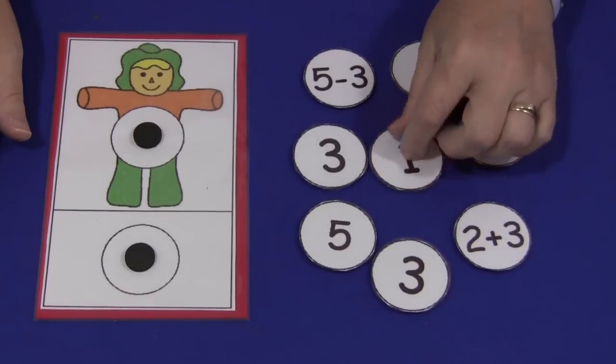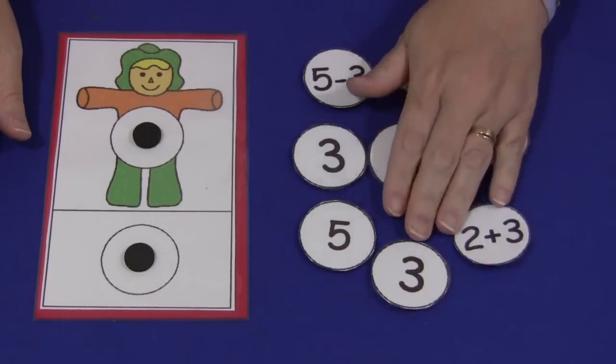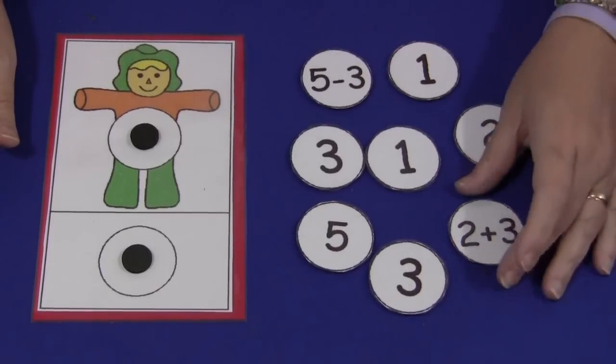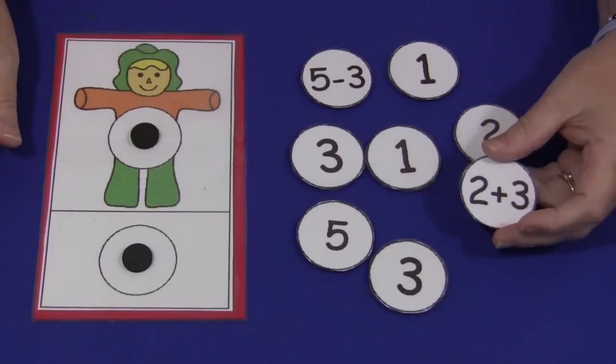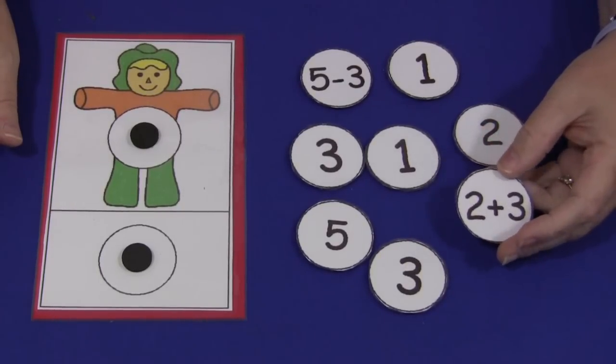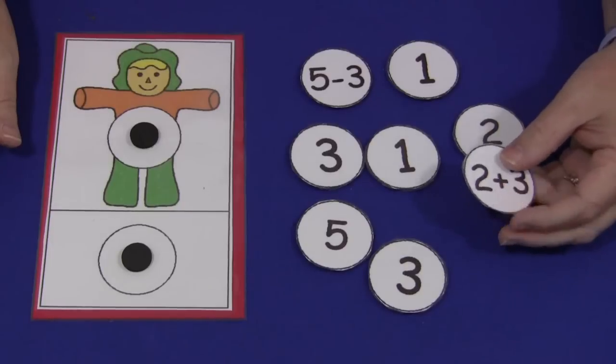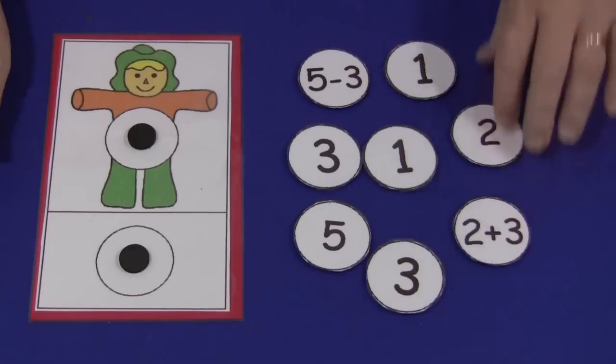I've included the patterns for numbers 0 to 30 and then I've also included blank patterns, blank circles. So if you wanted to write your own addition or subtraction equations in, you could do that as well and use that for more than just one-to-one correspondence.